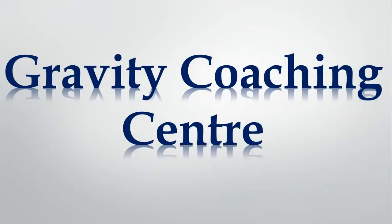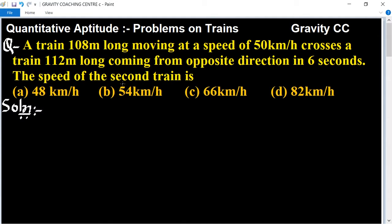Welcome to our channel Gravity Coaching Center. Quantitative aptitude chapter, problems on trains. Question: A train 108 meters long moving at a speed of 50 km per hour crosses a train 112 meters long coming from opposite direction in 6 seconds. So the speed of the second train is what?